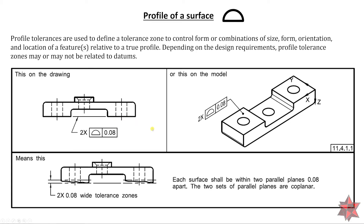Here is an example from the drawing. We have two surfaces and it asks us to evaluate the surface with a tolerance of 0.08. We will have two characteristics, one for each surface. On the 3D model and on the actual part, which has a deformed surface, each surface shall be within two parallel planes 0.08 apart. The two sets of parallel planes are coplanar.